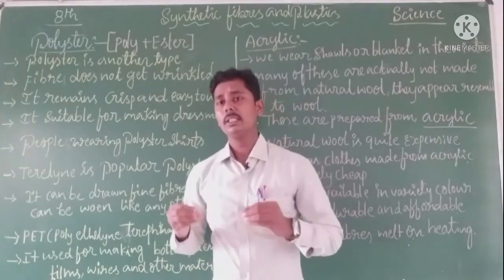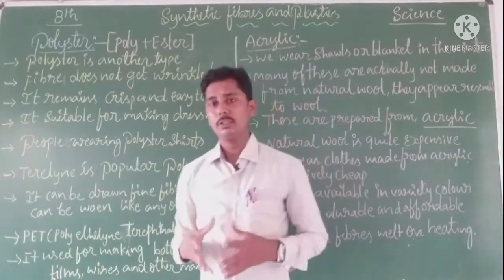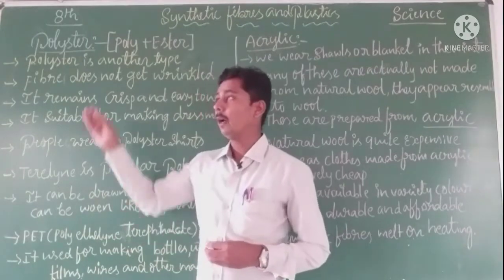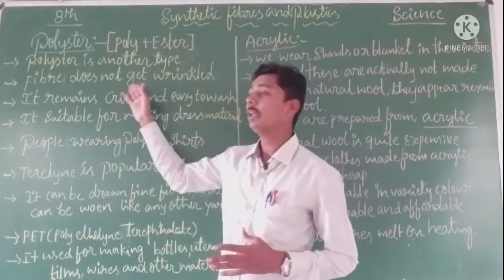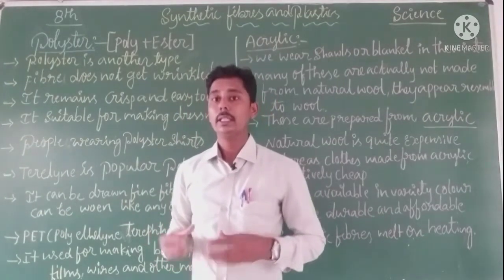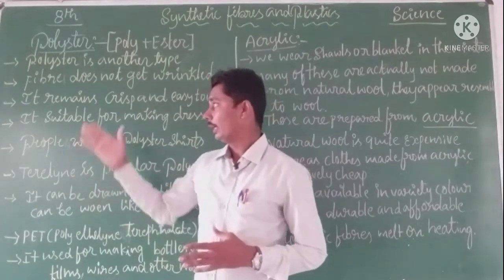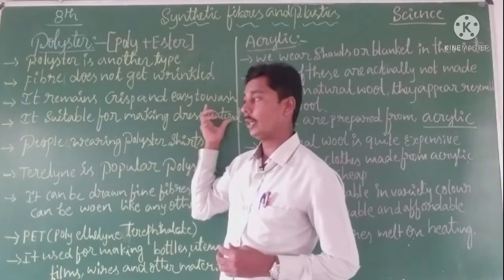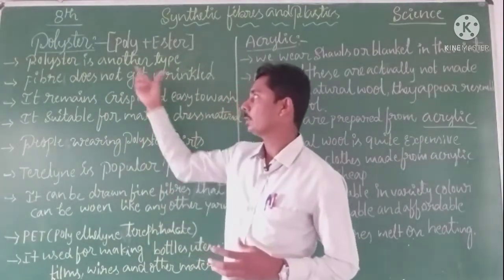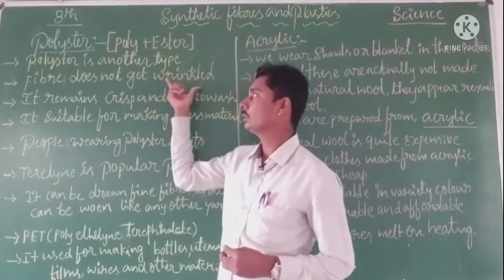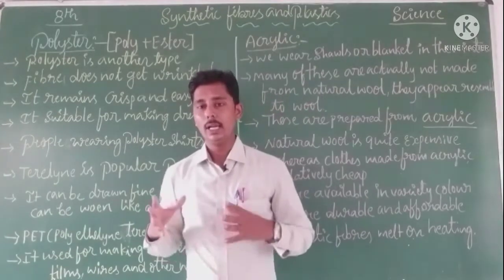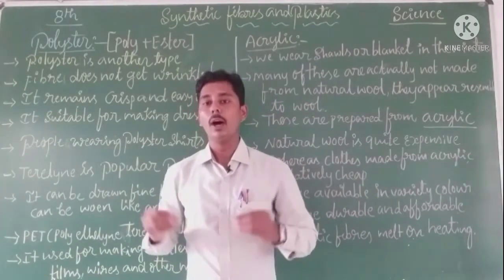Polyester is one of the synthetic fibers, and fabrics made from polyester fibers do not wrinkle easily compared to other fibers. Polyester clothes remain crisp — meaning they stay dry and in suitable condition — and are easy to wash. Most people wear polyester shirts and clothing because they are comfortable and suitable for all conditions.